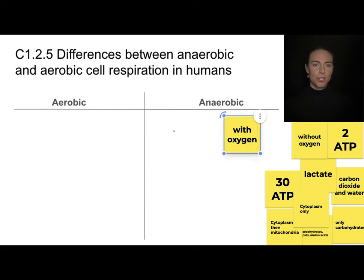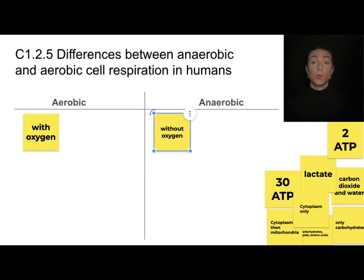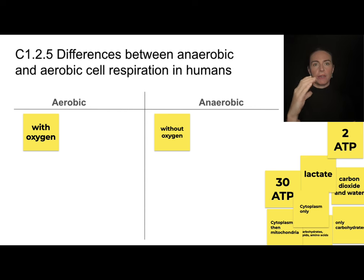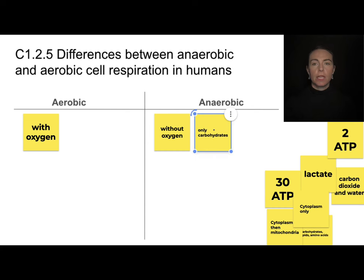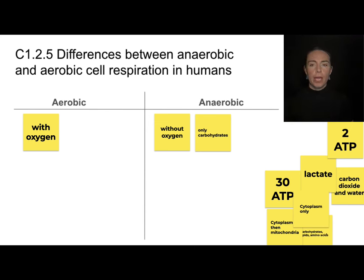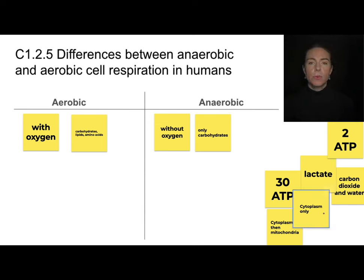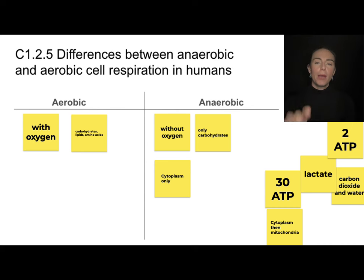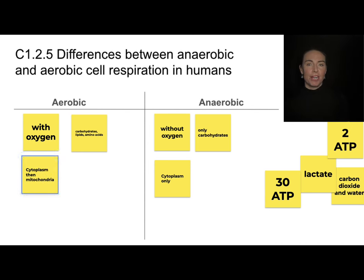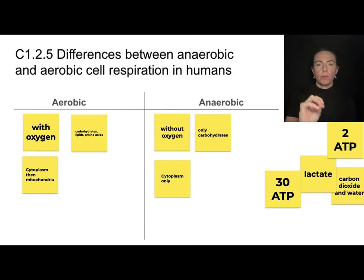Aerobic means with oxygen and anaerobic means without oxygen. Because of that, we use different substrates as the initial energy source. Anaerobic pathways can only use carbohydrates — something like glucose. If you have oxygen and are doing an aerobic pathway, you can utilize a wider array of molecules: a carbohydrate, a lipid, or an amino acid. Anaerobic pathways happen completely in the cytoplasm; you only go to the mitochondria if you have oxygen for the aerobic pathway, which starts in the cytoplasm and finishes in the mitochondria.